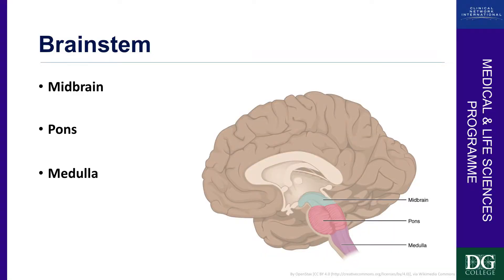Beneath that we have the midbrain, the pons and the medulla — this is the brainstem. This is really important: we're now talking about functions of survival. A lot of the autonomic functions in a human being — whether it be respiration, coughing, or breathing — are all modulated through the brainstem.